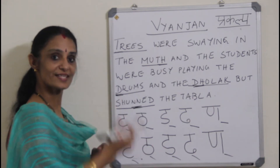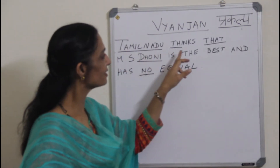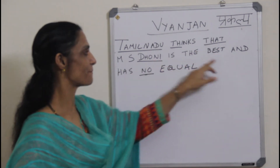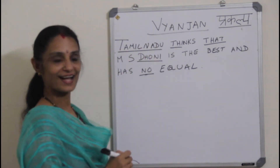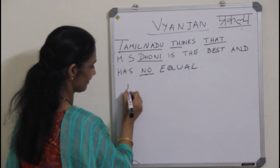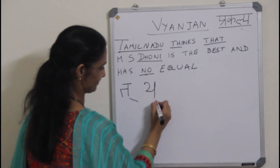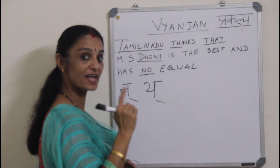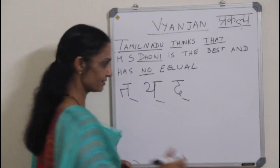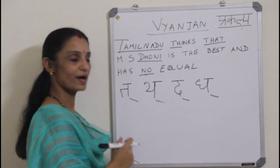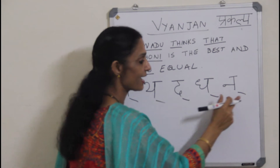Let us proceed to the next set of Vyanjan. The sentence is: 'Tamil Nadu thinks that M.S. Dhoni is the best and has no equal.' Five words. I take T from Tamil Nadu, Tha from thinks, Dha from that, Dha from Dhoni, and N from no. So it is Tha, Tha, Dha, Dha, and Na.